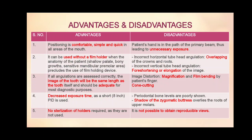The advantages of the bisecting angle technique are that it is a comfortable, simple, and quick technique. It can be used even without a film holder when the anatomy of the patient precludes the use of a film holding device. If all angulations are assessed correctly, the image of the tooth will be the same length as the tooth and adequate for diagnostic purposes. There is also decreased exposure time due to the short PID. Disadvantages include the patient's hand being in the path of the primary beam, causing unnecessary exposure. Incorrect horizontal tube angulation causes overlapping of crowns and roots. Incorrect vertical tube angulation can cause foreshortening or elongation of the image. There are image distortions in the form of magnification and film bending. Chances of cone cutting are high. The shadow of the zygomatic buttress overlies the root of upper molars, and it is not possible to obtain reproducible views.